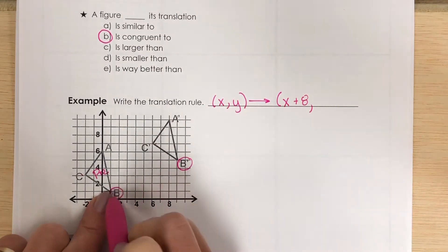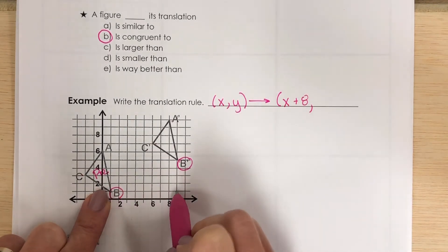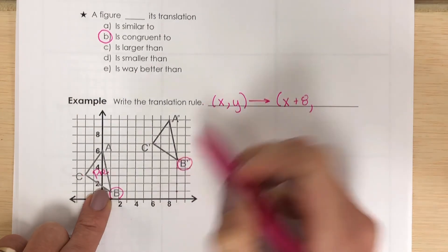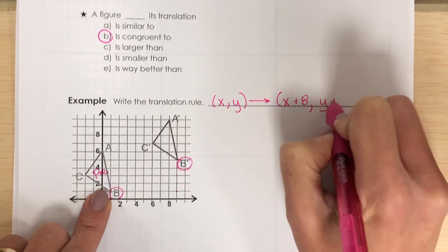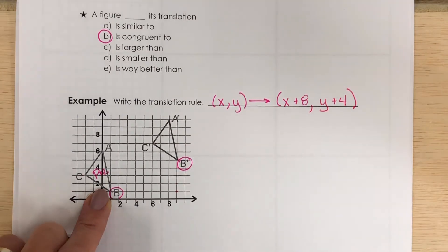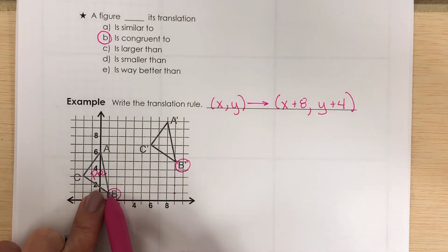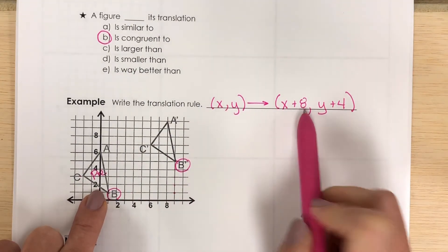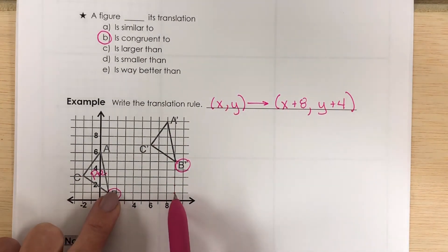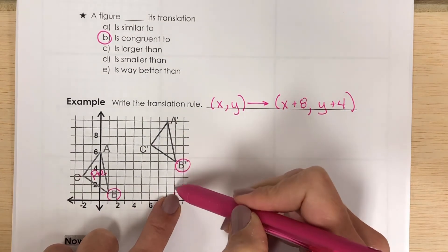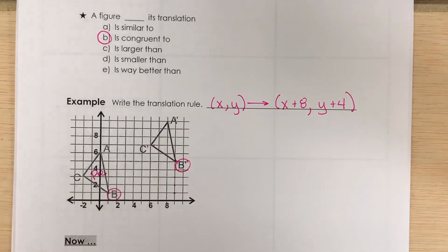But I also realize that it moves up, right? Because I went here and I move it up. So each of my Y values move by 1, 2, 3, 4. So there is my translation rule. For every coordinate point in my pre-image, I'm adding 8 to the X values, meaning I'm moving it to the right 8. And then I'm adding 4 to my Y values, which means they increase by 4. So that would be an example of the translation rule.